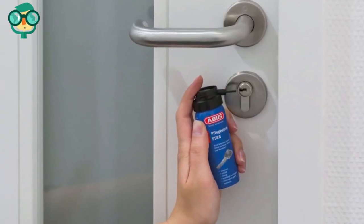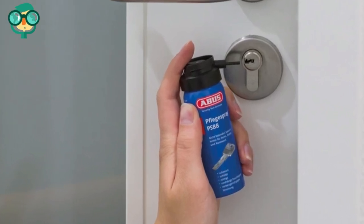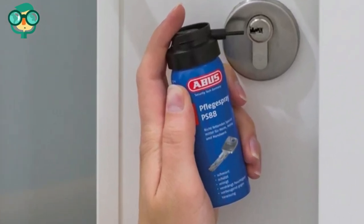Spray the lock cylinder and opening. Use a spray cleaner, such as WD-40, to clean the lock cylinder and opening. Spray the cleaner into the keyhole.